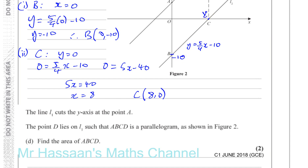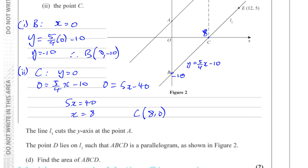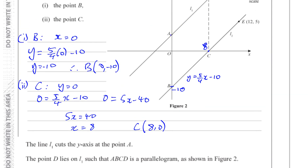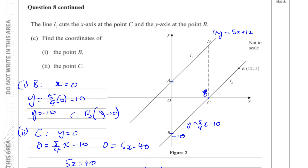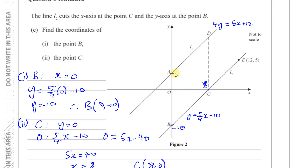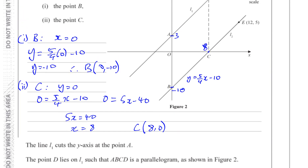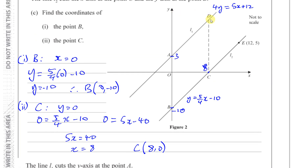Part d says line L1 cuts the y-axis at point A. When x is 0, y equals 12 over 4, which is 3, so point A is at (0, 3). Point D lies on L1 such that ABCD is a parallelogram. We need to find the area of ABCD.